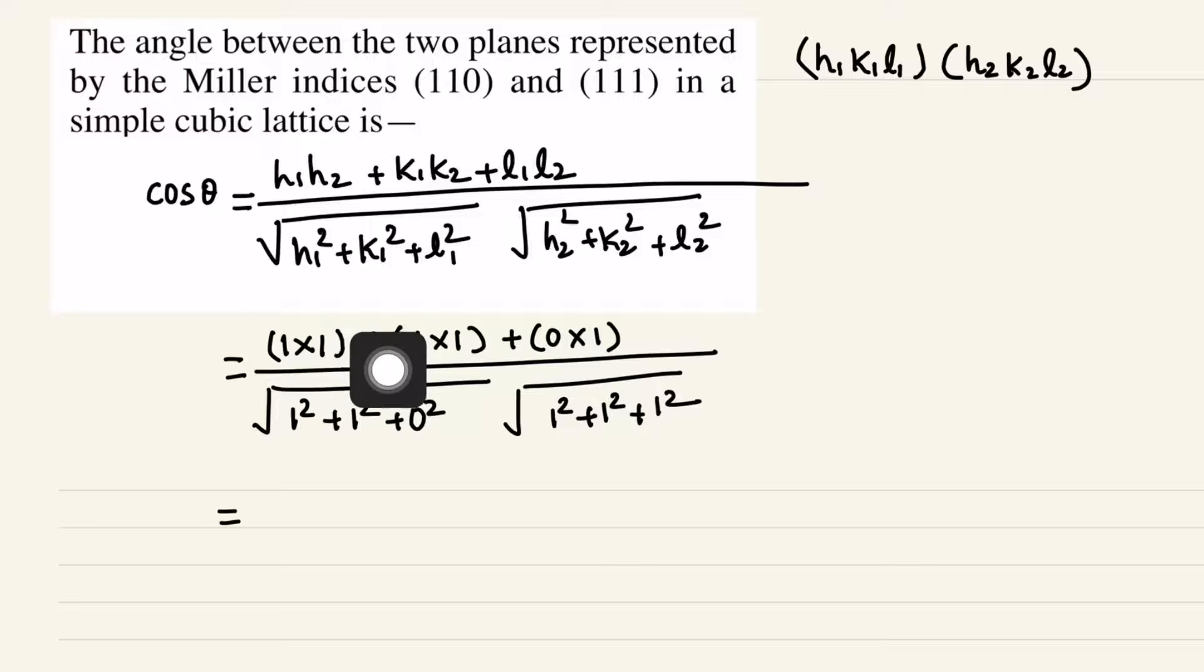Now if you just solve it, we'll be getting 1 plus 1, 2 divided by square root of 2 into square root of 3. Now it will be simplified here and we'll be getting a square root of 2 by 3.